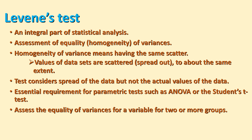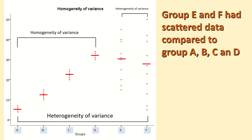Levene's test assesses the equality of variances for variables across two or more groups. This slide shows the difference between homogeneity of variance and heterogeneity of variance in a scatter plot diagram. On the x-axis we have groups A to F, and on the y-axis we have a score from 0 to 50.